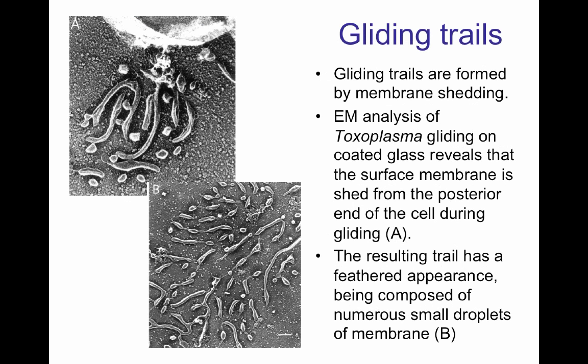How do we know that Toxoplasma is gliding? Because it leaves behind gliding trails — small areas of membrane that are shed and stick to the surface as the microorganism moves forward. That is an indication that those complexes are binding tightly to the surface on which the microorganism is moving.